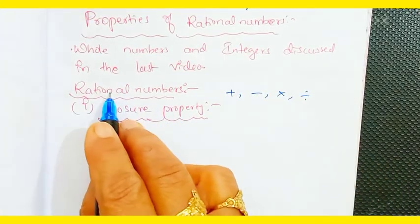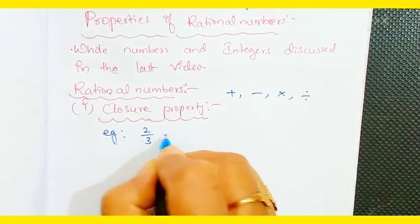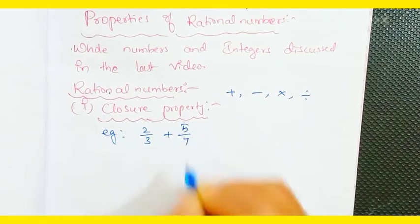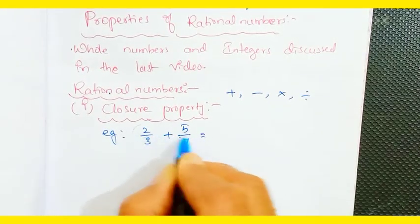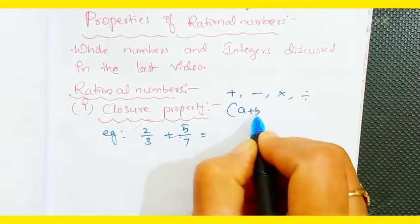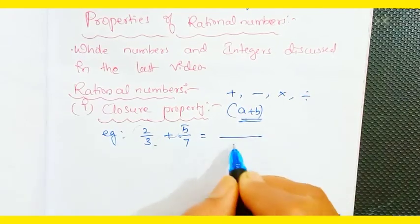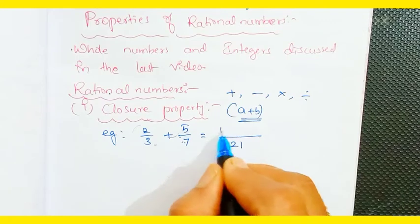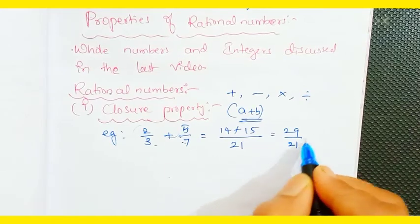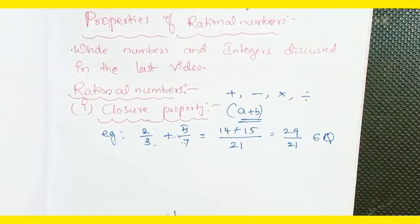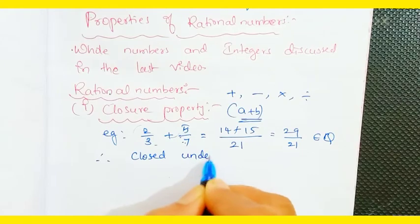Closure property for rational numbers: suppose we take 2/3 plus 5/7. These two are rational numbers. The closure property states a + b should also be rational. Taking the LCM — 3 × 7 = 21 — cross multiplication gives 7 × 2 = 14 and 5 × 3 = 15, so 14 + 15 = 29/21. This also belongs to rational numbers. Therefore, rational numbers are closed under addition.